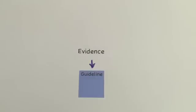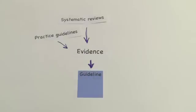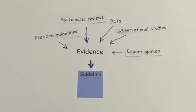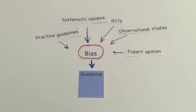Guidelines can be based on evidence from other guidelines, systematic reviews, randomized trials, other study designs, or even on expert opinion. Each of these sources can be at risk for different types of biases, and some more so than others.